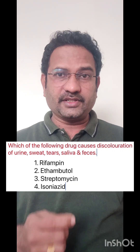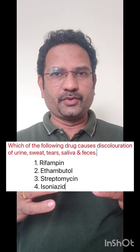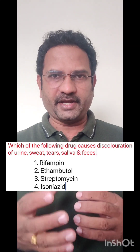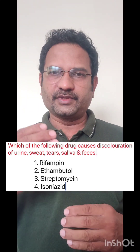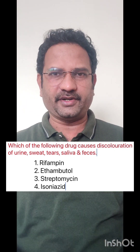Isoniazid causes peripheral neuritis. To reduce the peripheral neuritis problem, it is given along with pyridoxin. So this is about the adverse effects of anti-TB drugs. Thank you.